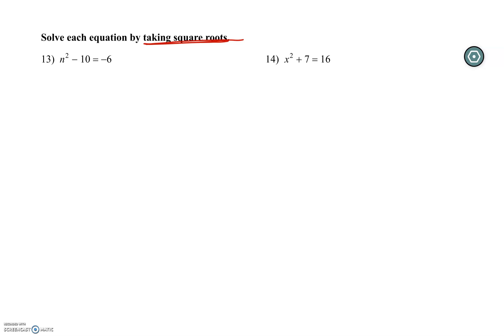Now, as in all the other methods, we wanted to set it equal to zero, but this is the opposite of that. We want to get our squared term isolated on one side. I'm going to add 10 to both sides. Now I just have a squared equal to a number.